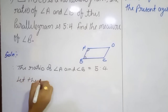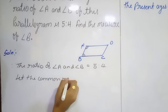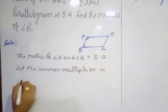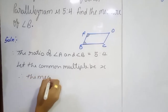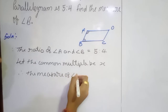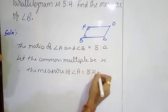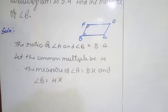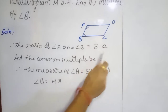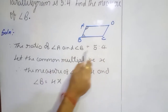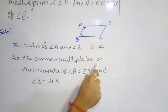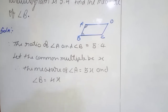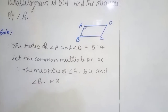Let the common multiple be x. Therefore, the measure of angle A is equal to 5x and angle B is equal to 4x. How did we get that? Because we have the ratio of angle A to angle B as 5 to 4, and we introduced the common multiple x, so we multiplied both values by x. So we got measure of angle A is 5x and measure of angle B is 4x.